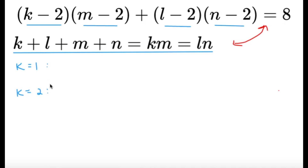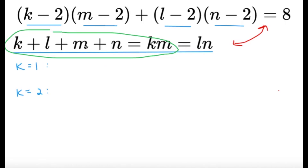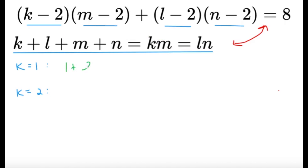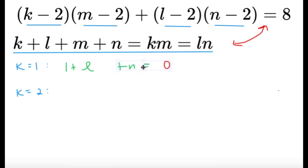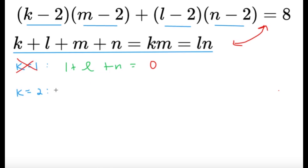If K equals 1, using the given equation KM equals K plus L plus M plus N, we get 1 plus L plus M plus N equals M. Cancelling M gives 1 plus L plus N equals 0. But since L and N are positive integers, the left side must be positive — a contradiction. So K cannot equal 1, and by symmetry none of the variables can equal 1.